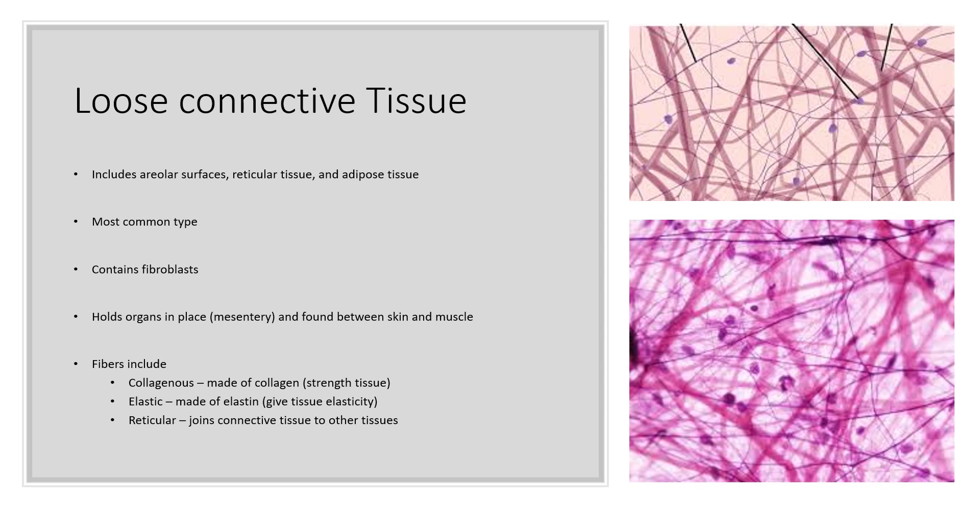The first tissue type is loose connective tissue, found on areolar surfaces. It also includes reticular tissue and adipose tissue, which are specialized types of loose connective tissue. It's the most common type of connective tissue and contains fibroblasts producing collagen. It holds organs in place in the form of mesentery, and you can also find it between the skin and the muscle. Its fibers include collagen, which gives strength, elastin for elasticity, and reticular fibers that join tissues together.